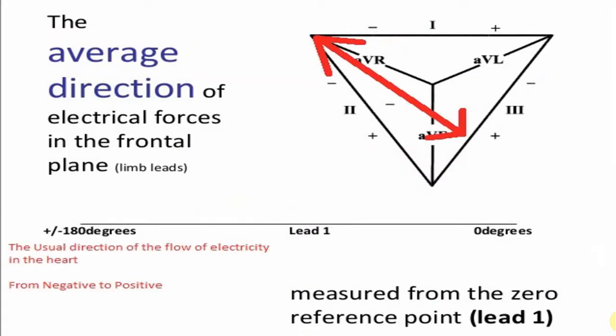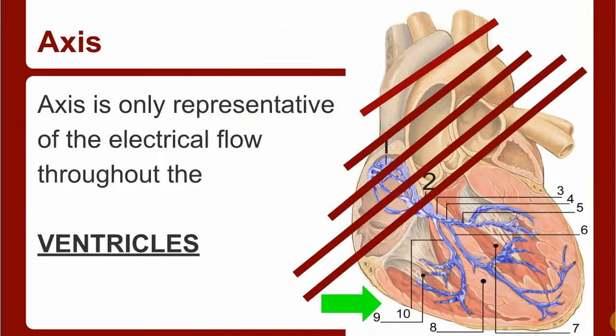The usual direction of electricity flow in the heart should go from left to right—our left to our right, patients' right to left.